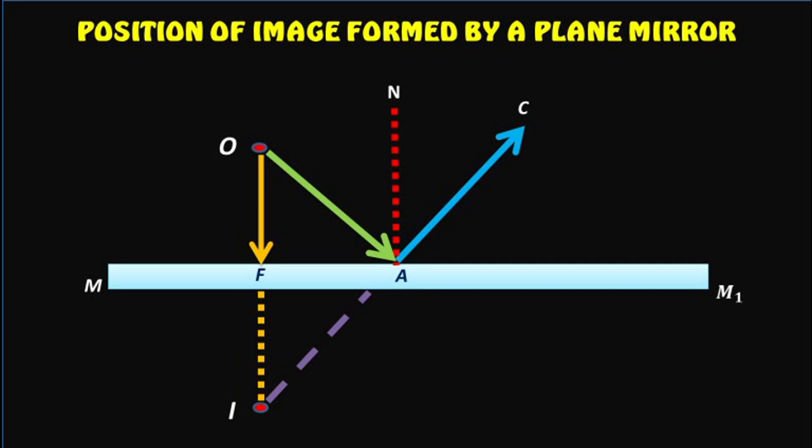Ray OF incident normally on the mirror gets reflected by the mirror along the same path, that is along FO. Since angle I is equal to zero degrees, therefore angle R also is equal to zero degrees.